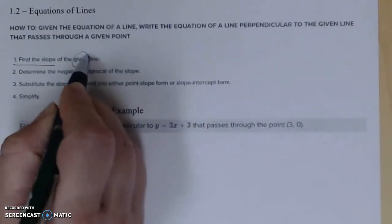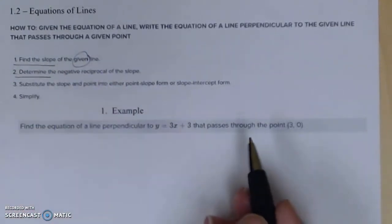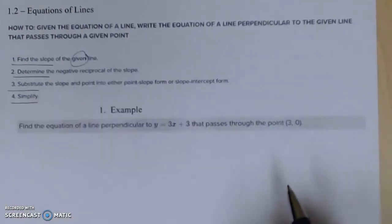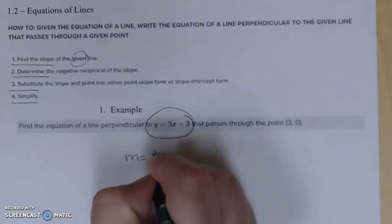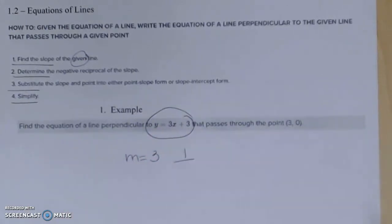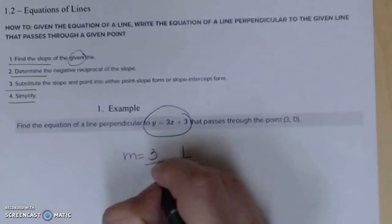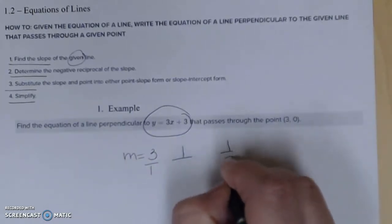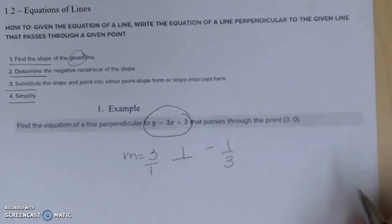You want to find the slope of the given line, determine the negative reciprocal of the slope, substitute, and simplify. So here's the given line—it has a slope of 3. If I want the one perpendicular to it, I'm going to put it over 1 if it's not already a fraction.